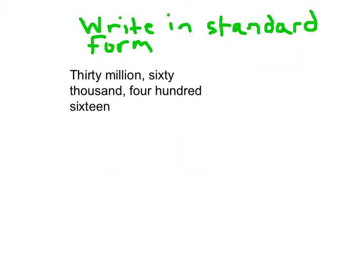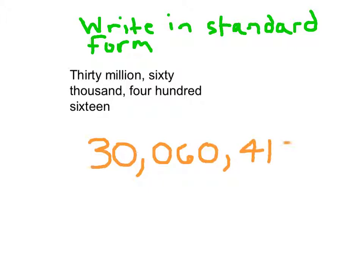Another example: write in standard form thirty million, sixty thousand, four hundred sixteen. We start in the millions period — it says 30 million, so we write 3, 0, then place a comma. Then it says 60,000. There are usually three digits in each period, so we place a 0 for the hundred thousands, then write 60. Finally, it says 416 in the ones period, so we write 4, 1, 6.